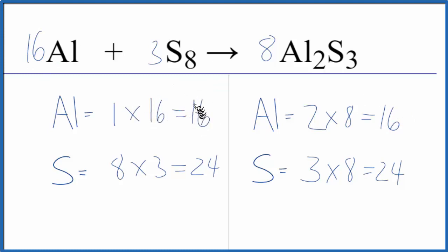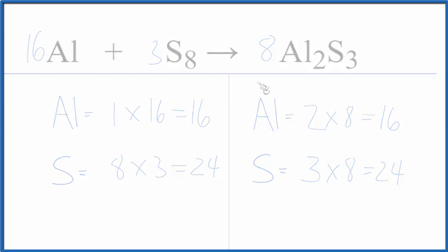This equation is balanced. So the key here is if you get something odd like eight and three, sometimes it's useful to find a common number that they both go into and work from there. This is Dr. B with the balanced equation for Al plus S8 yields Al2S3. Thanks for watching.